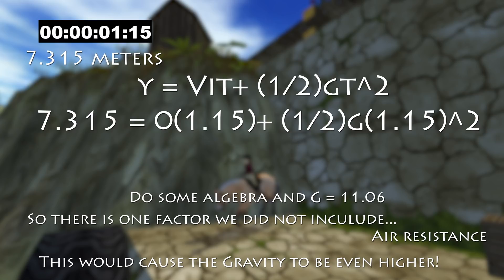Because of air resistance, the horse and rider aren't going to be falling quite as fast as they would hypothetically without any kind of air resistance. So it's still going to be close to 9.81, and for a game, this is pretty accurate.